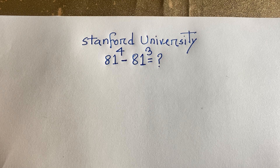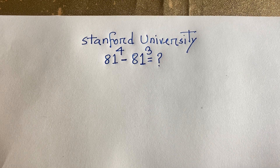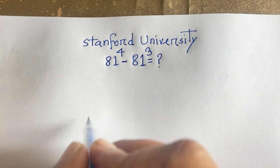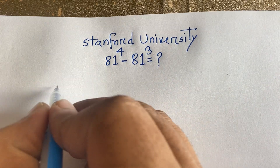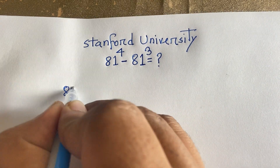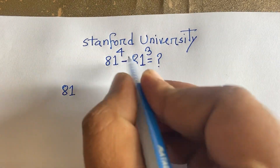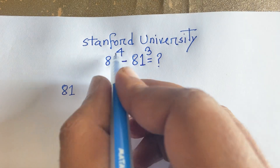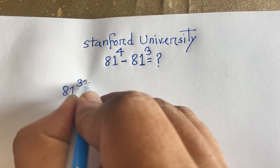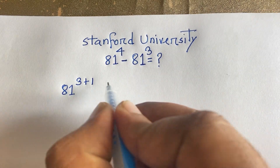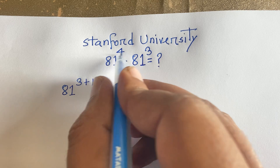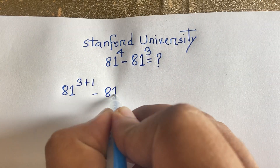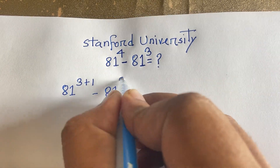First of all, I can see easily here is 81. The exponent is 4, which I will rewrite as 3 plus 1, so it becomes 81 to the power (3+1), minus 81 to the power 3.